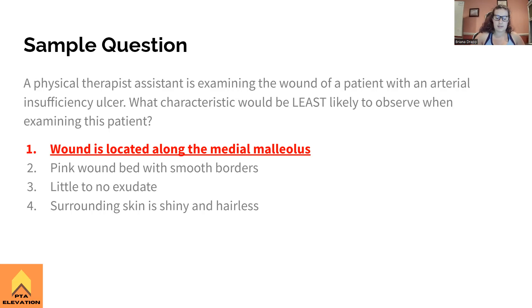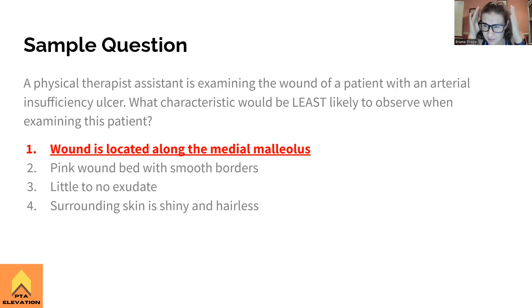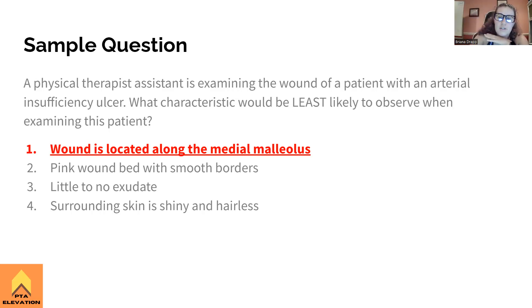A pink wound bed with smooth borders is likely, little to no exudate is also very likely with arterial insufficiency, and shiny hairless surrounding skin all check out. Since the question asks 'least likely,' the medial malleolus is the correct answer. Know the difference between arterial and venous insufficiency ulcers — this will show up on the exam. Know this especially for your other systems section.